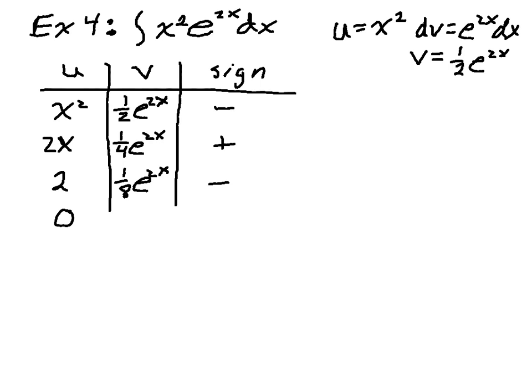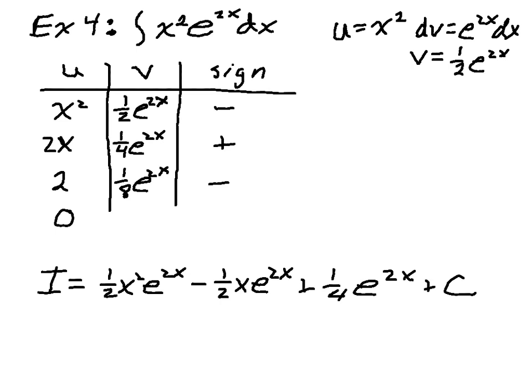Now the answer that I'm looking for, the integral, I'm just going to call it i, is 1 half x squared. So I just multiply across the rows. E to the 2x. I take the sign from the sign column, minus. And then it will be, the 2 and the 1 fourth cancel to 1 half x e to the 2x. And then plus, the 2 and the 1 eighth cancel to 1 fourth. 1 fourth e to the 2x. And then it zeroes out, and so I'm going to put plus c.